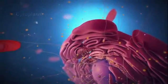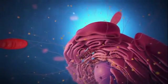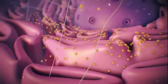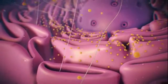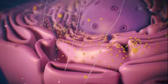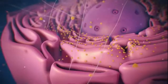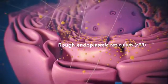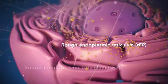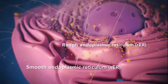Ribosomes may wander freely within the cytoplasm or attach to the endoplasmic reticulum, sometimes abbreviated as ER. There are two types of ER. Rough ER has ribosomes attached to it, and smooth ER doesn't have ribosomes attached to it.